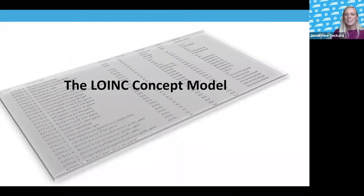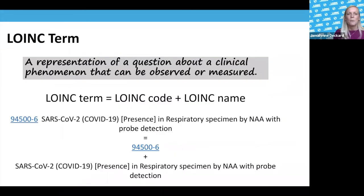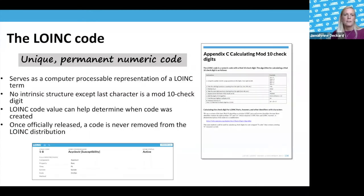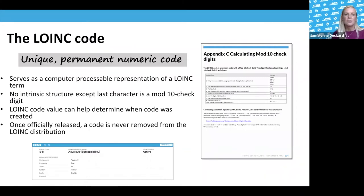Now we'll dive into the LOINC concept model. When we talk about a LOINC term, we're talking about the LOINC code as well as the name — together they represent the observation or measurement done on a patient. The LOINC code itself is a unique permanent numeric code that serves as a computer-processable representation. There's no intrinsic structure except that the last character is a mod check 10 check digit, described in Appendix C of the LOINC user's guide.